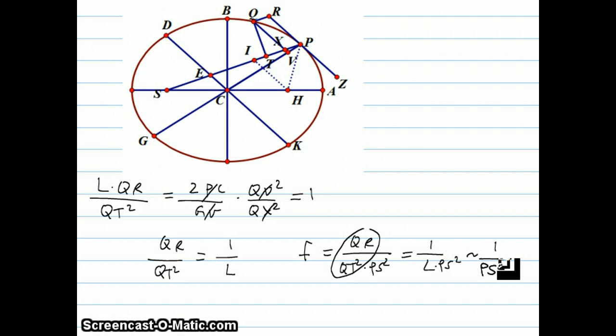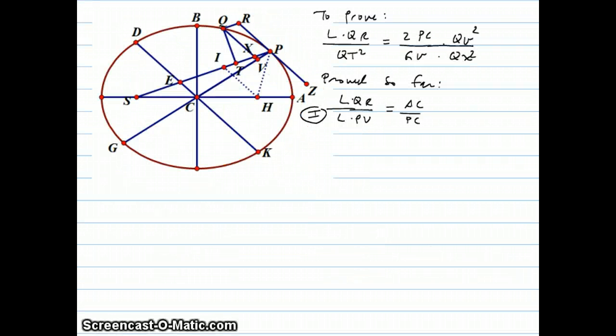At this point in the lecture series, we've proved this equation 1: LQR over LPV equals AC over PC. Notice that this LQR is also part of what he's actually trying to prove. He has four more equations to prove, and these ones are a lot shorter, so I should be able to get through a couple of them in this 10-minute interval.